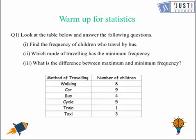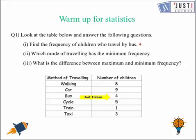Let's begin this lesson with some warm-up questions. You can pause the video here to try these questions. In the first one, we need to find the frequency of children who travel by bus. So here for bus, we see the frequency is given 4. In the second one, which mode of travelling has the minimum frequency? So for train, the frequency is 1.